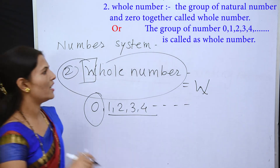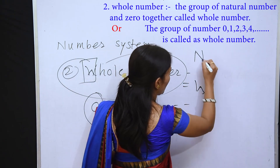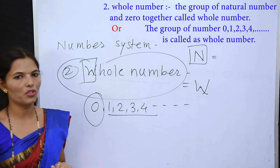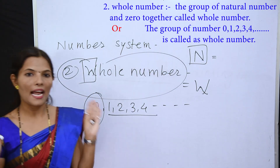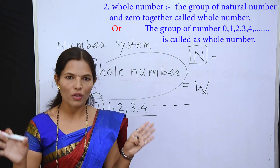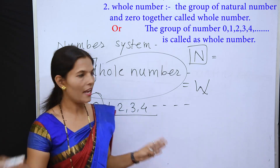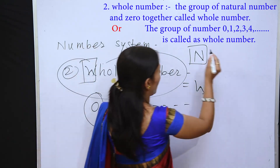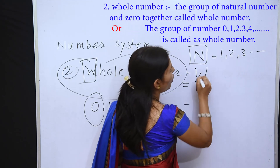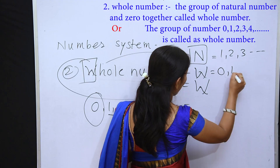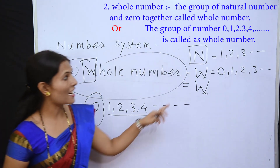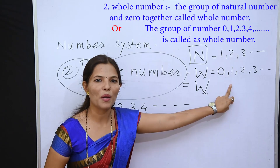Natural number is shown by the letter N, because N is the starting letter of natural number. So I think the concept of what is natural number and what is whole number is now clear. What is important to note: natural number starts from 1, 2, 3 up to infinity, and whole number starts from 0, 1, 2, 3, 4 up to infinity. So natural number is included inside whole number.